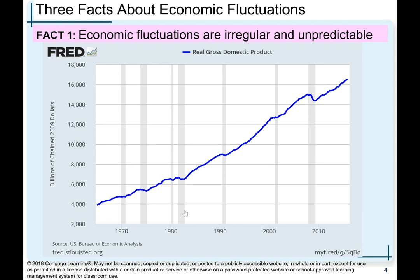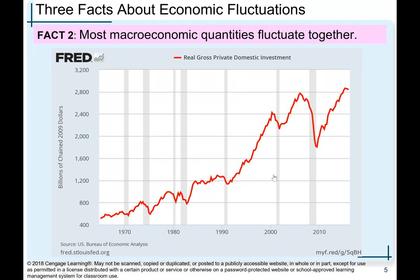Economic fluctuations are irregular and unpredictable. This first picture shows the growth trend of real gross domestic product over the period from about 1960 to about 2015. You can see that growth is on a straight upward trajectory, and the shaded areas are the recessions the economy has experienced. Fact number two: most macroeconomic quantities fluctuate together.